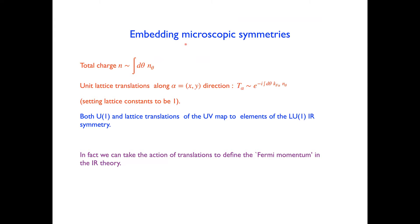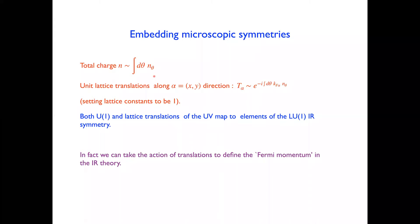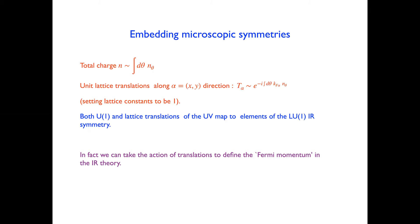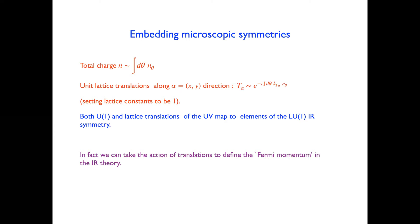We identify this loop group L(U(1)) as the G_IR of the Fermi liquid. The next thing to understand is how to embed the microscopic conserved quantities — the total charge and lattice translations — into this low-energy symmetry. The total charge is obviously the integral of n(theta) d theta. Unit lattice translations along the x or y direction embed as e to the minus i times the integral of K_F^alpha(theta) n(theta) d theta, where alpha is either x or y, and we've set lattice constants to one. So both U(1) and lattice translations in the UV can be identified as elements of the L(U(1)) IR symmetry.